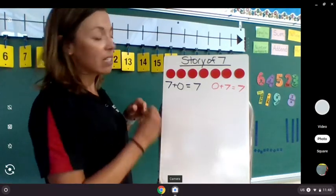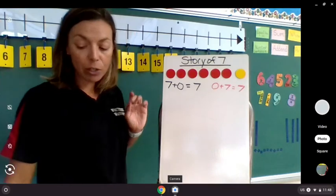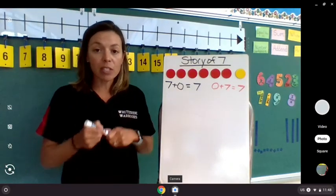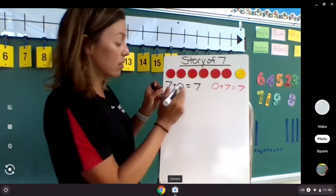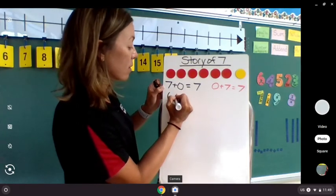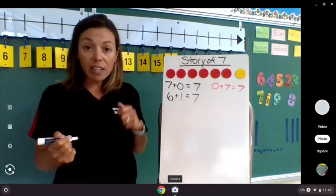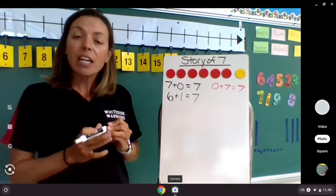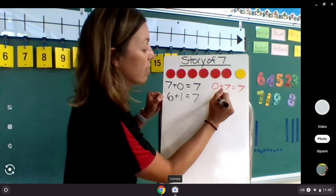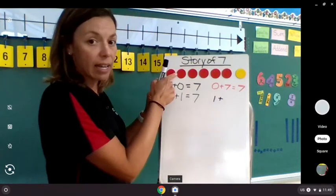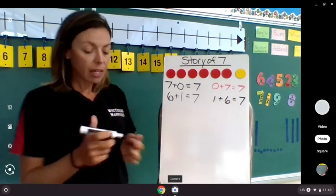If we were to take away 1 red and replace it with a yellow, we would have a new number sentence. In this number sentence, we now have 1, 2, 3, 4, 5, 6 red plus 1 yellow. That also gives us a total, again, still a sum of 7. 6 plus 1 is 7. Let's do our turnaround fact. And that also tells us that 1 plus 6 also is 7.